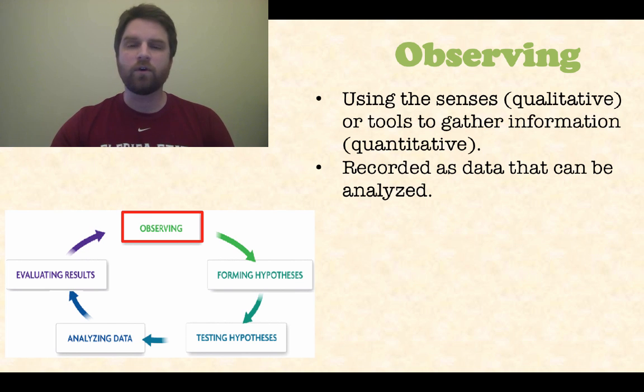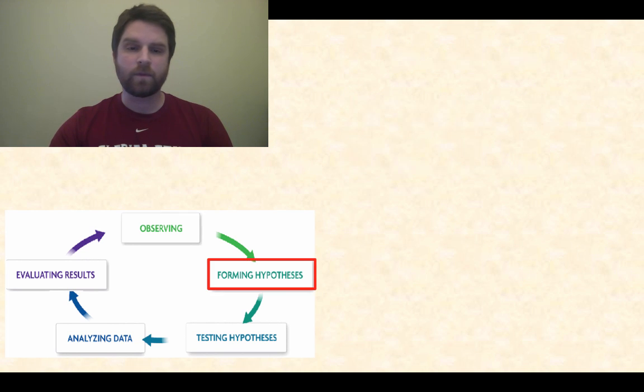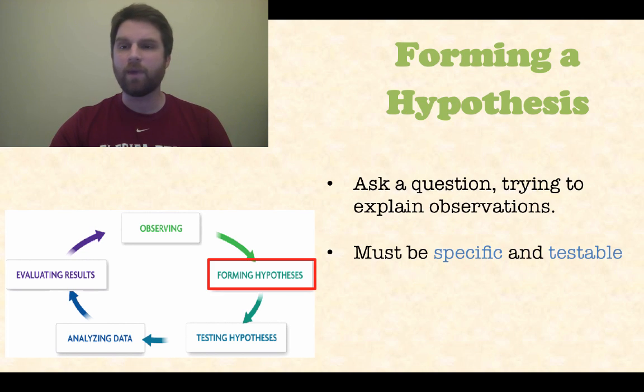Also when you observe, you're going to record data and you're going to analyze it later. Next step we're going to go on to is forming your hypothesis. When you form a hypothesis, you're basically looking at a question and you're trying to explain the observations that you see. So you come up with a question and say, I think that the sky is blue, and then you want to come up with a reason as to why that is. The thing with the hypothesis is that it has to be specific and it has to be testable. It can't be super vague and it has to be able to put into experimental form.